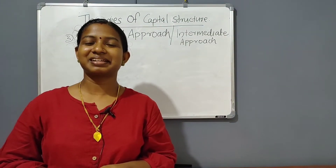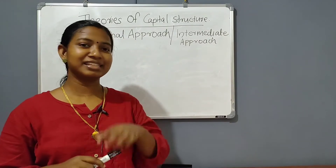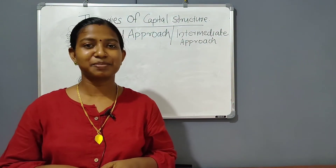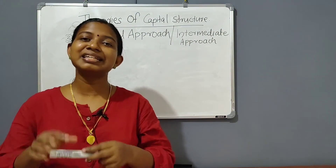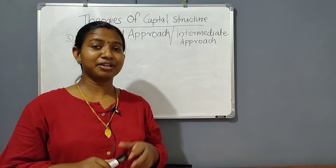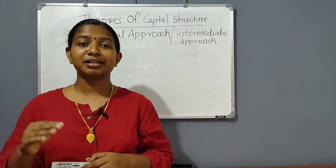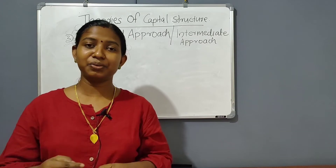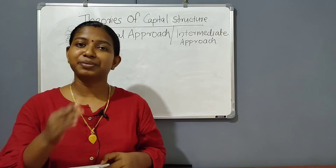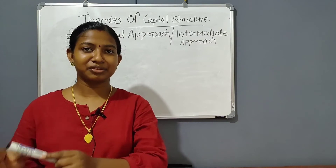The third theory of capital structure is the Traditional approach. This is the intermediate approach, explaining a middle ground between the two theories. According to this theory, up to a particular point, we have to change the debt equity mix. As more and more debt is used, the cost of capital is reduced and the firm's value increases. This particular point is called the optimal capital structure.